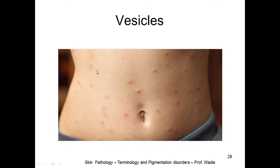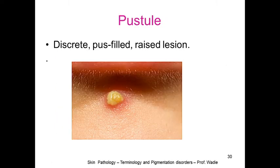A pustule, as the name indicates, is a discrete pus-filled raised lesion. Any pus-filled raised lesion we call a pustule. If fluid-filled we call it vesicle or bulla based on size, but when it is full of pus we call it a pustule.